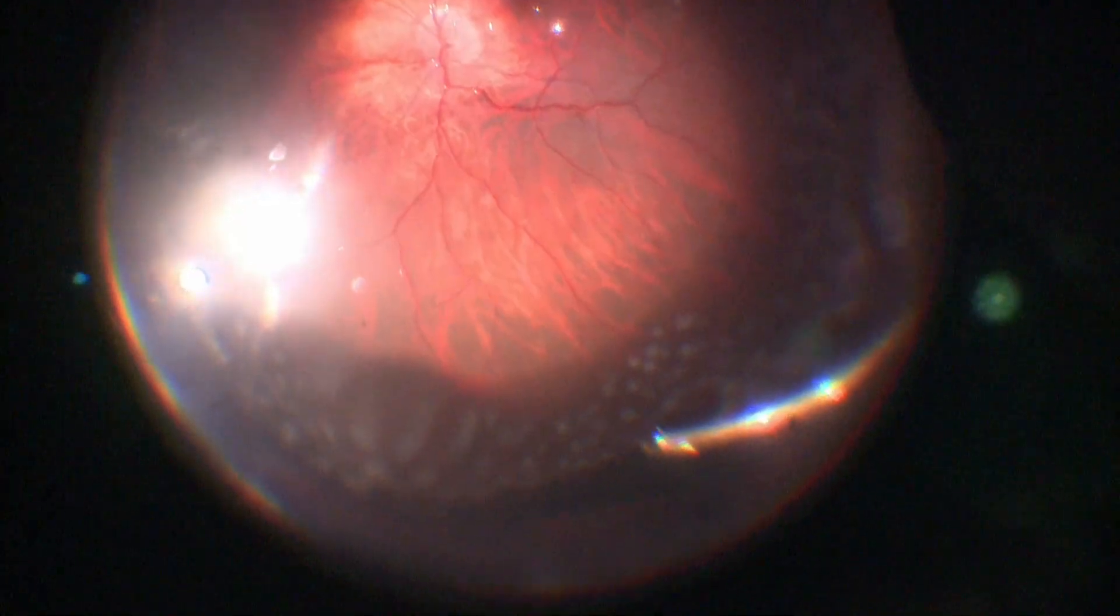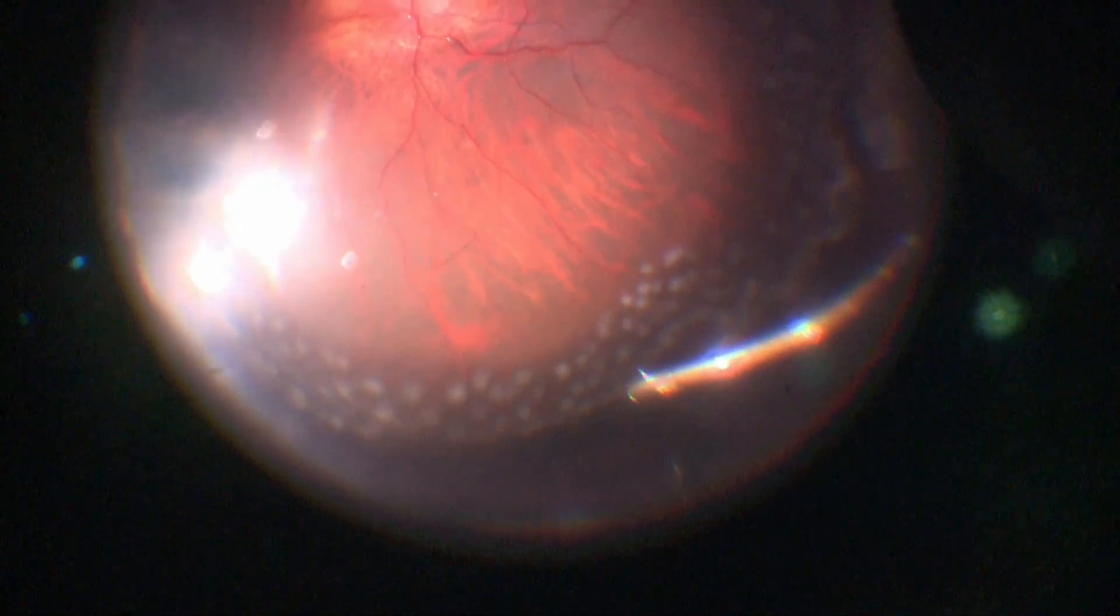This is followed by air PFCL exchange. The edges of the tear are kept dry. Following this maneuver, slippage is noted along with bleeding in the superotemporal quadrant. This is likely due to a possible inadvertent touch of the cutter to the choroid during the air PFCL exchange.